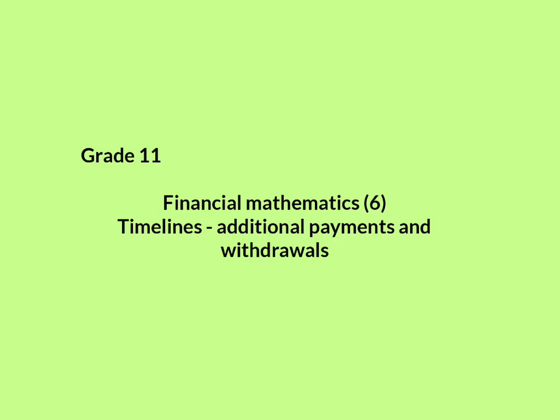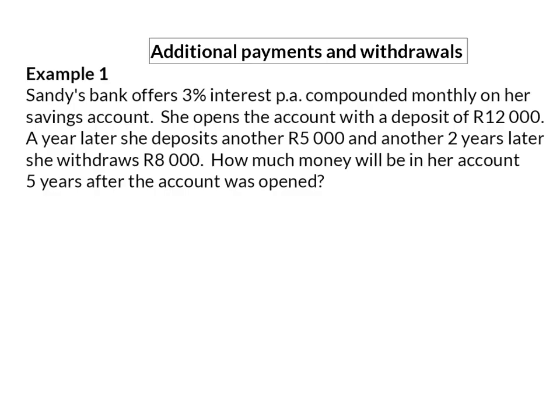In this lesson, we're going to have a look at how timelines can help when there are additional payments and withdrawals in an account. Sandy's bank offers 3% interest per annum, compounded monthly, on her savings account.